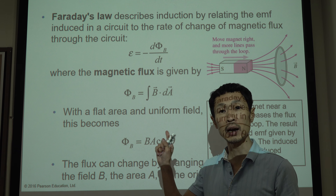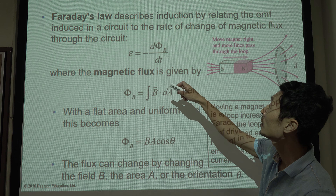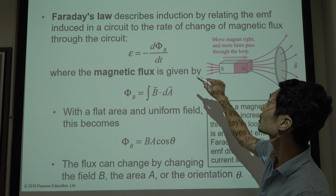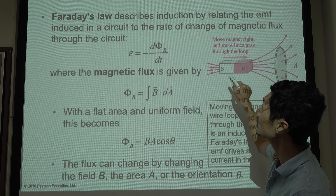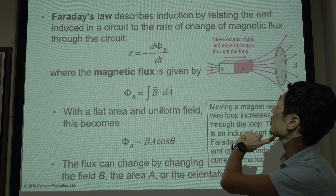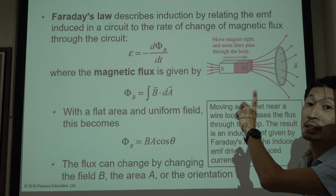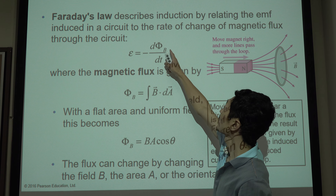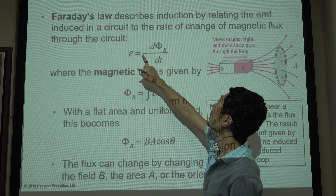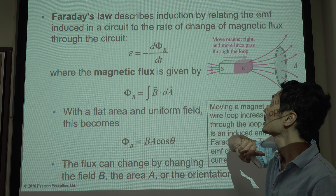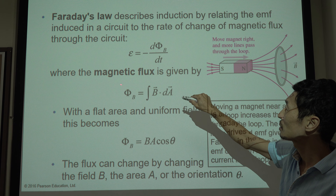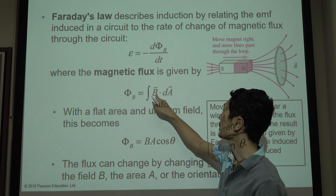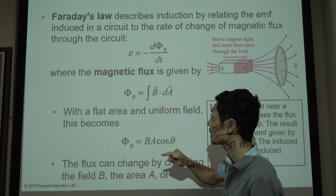There is a law to describe this phenomenon called Faraday's law, which relates the voltage induced in a circuit to the rate of change of magnetic flux through the circuit. The voltage equals the rate of change of magnetic flux as a function of time.